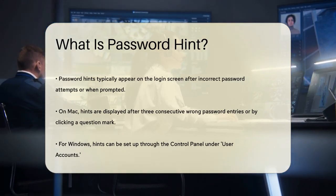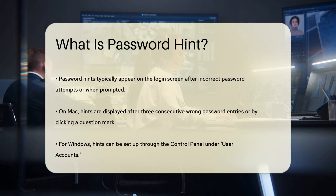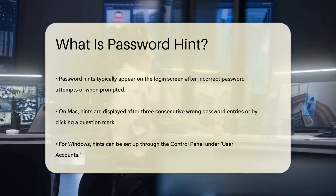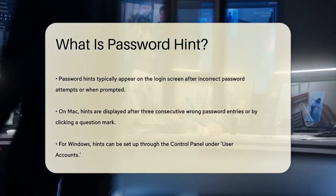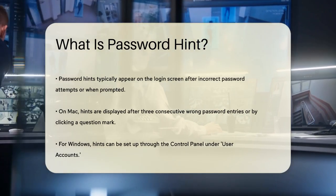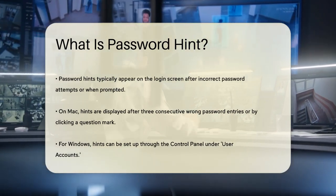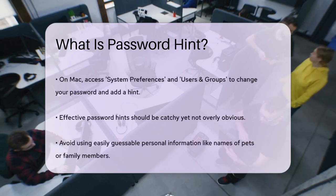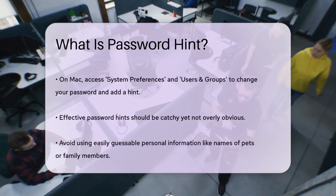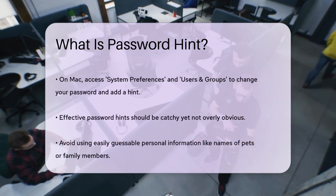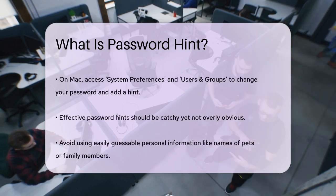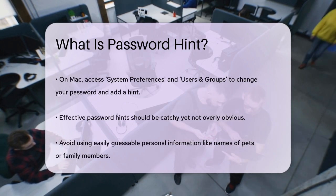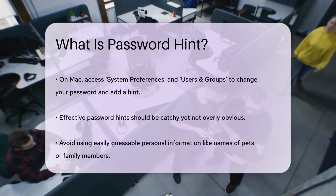Creating a password hint is quite straightforward. On Windows, you can navigate to the Control Panel, select User Accounts, Manage Another Account, and then Change the Password to set a hint. On a Mac, you go to the Apple menu, select System Preferences, and then Users and Groups to change your password and add a hint.